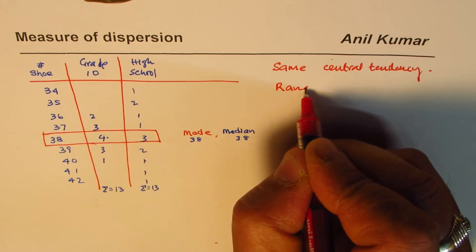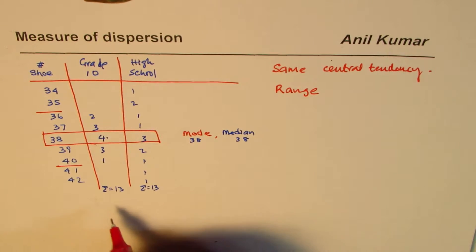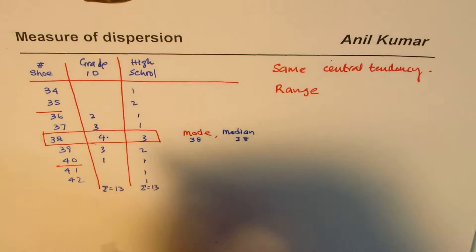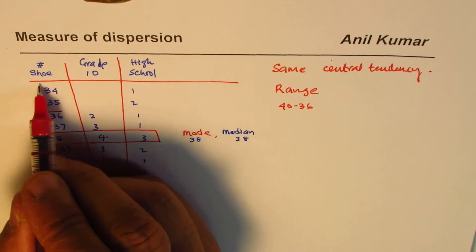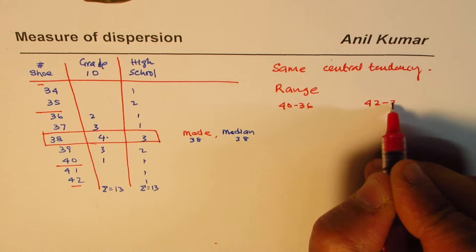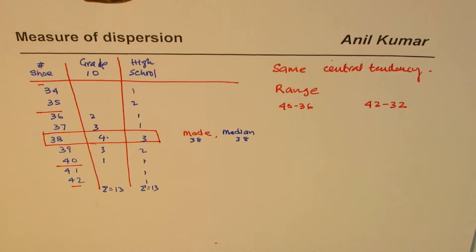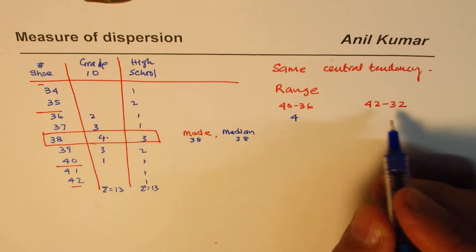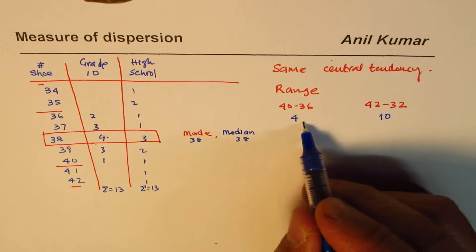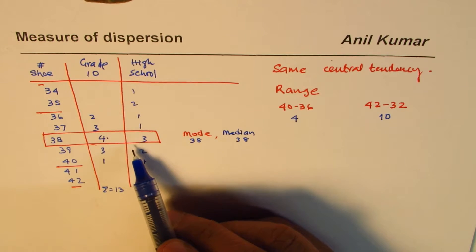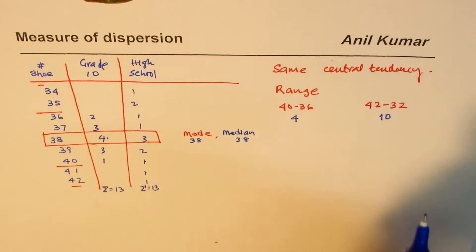However, when we look at the range, in case 1 the data goes from 36 to 40, so the range is 40 minus 36 = 4. In the other case it goes from 34 to 42, so the range is 42 minus 34 = 8. There is a huge difference in range — on one end we have a range of just 4 sizes, on the other hand a range of about 8 to 10 sizes.